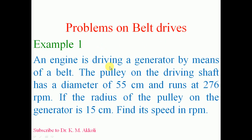Example 1. An engine is driving a generator by means of a belt. The pulley on the driving shaft has a diameter of 55 cm and runs at 276 rpm. If the radius of the pulley on the generator is 15 cm, find its speed in rpm. Here, the engine is the driving system and the generator is the driven system.